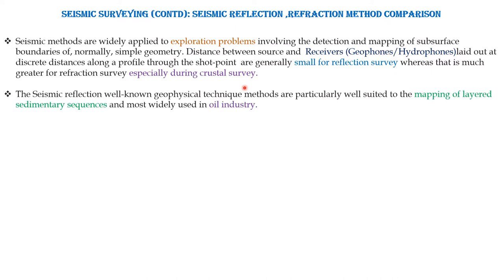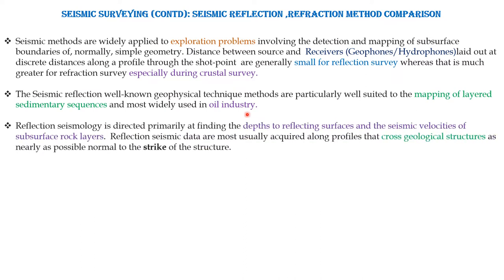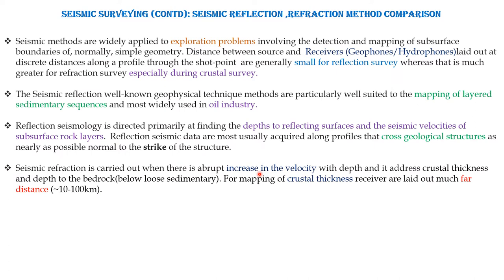The reflection method is widely used in the oil industry for mapping of sedimentary sequences. Reflection seismology is directed primarily at finding the depths to the reflecting surface and the seismic velocities of the subsurface layer. Reflection seismic data are most usefully acquired along profiles crossing the geological structure — we need to take the seismic reflection data linearly normal to the strike of the structure. Refraction is carried out when there is an abrupt increase in velocity with depth, addressing crustal thickness and depth to bedrock, with receivers laid out at far distance of 10 to 100 km.